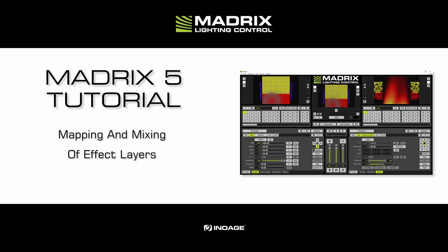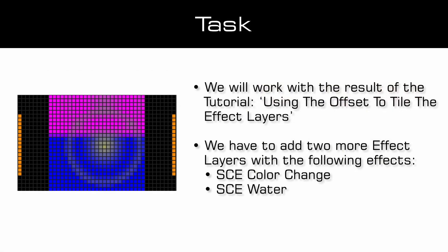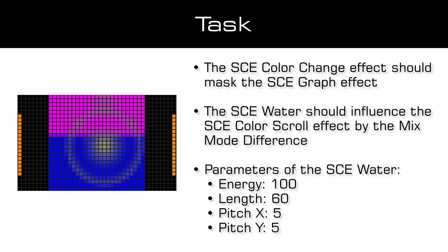We will work with the results of the tutorial using the offset to tile the effect layers. As a task we have to add two more effect layers with the following effects: an SCE color change and an SCE water. The SCE color change effect should mask the SCE graph effect, and the SCE water effect should influence the SCE color scroll effect with the mix mode difference. The parameters of the SCE water effect are: Energy 100, Length 60, Pitch X 5, and Pitch Y 5. Now let us start.